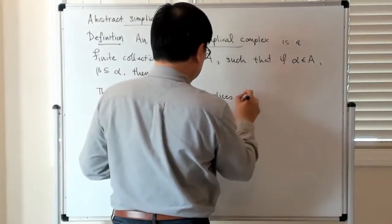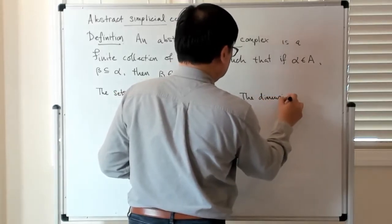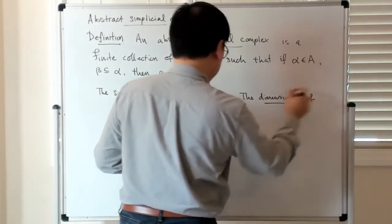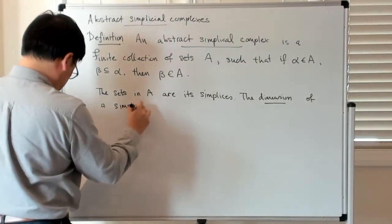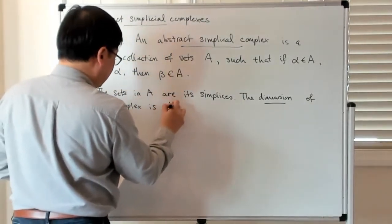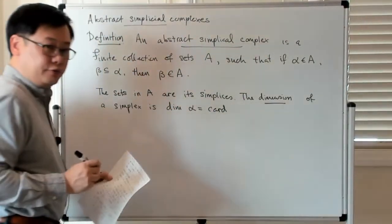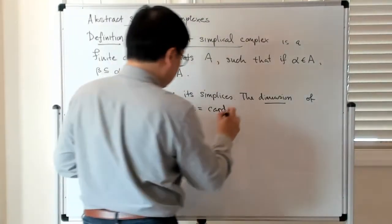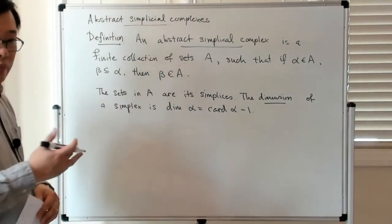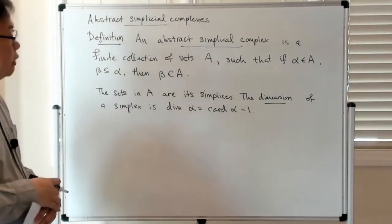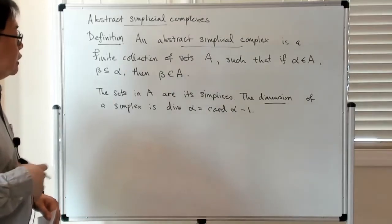The dimension of a simplex is denoted by dim of alpha, and it's just the cardinality, which is the number of elements in that set, minus one. The thing to keep in mind in regards to connecting this with the geometric realization is that...